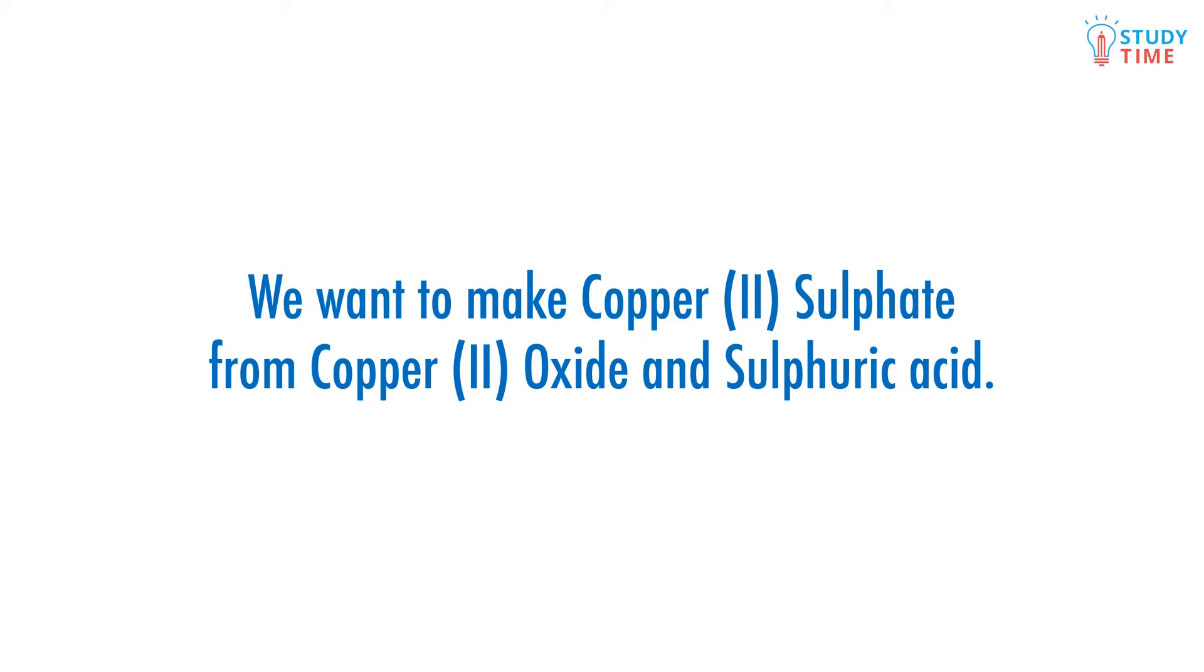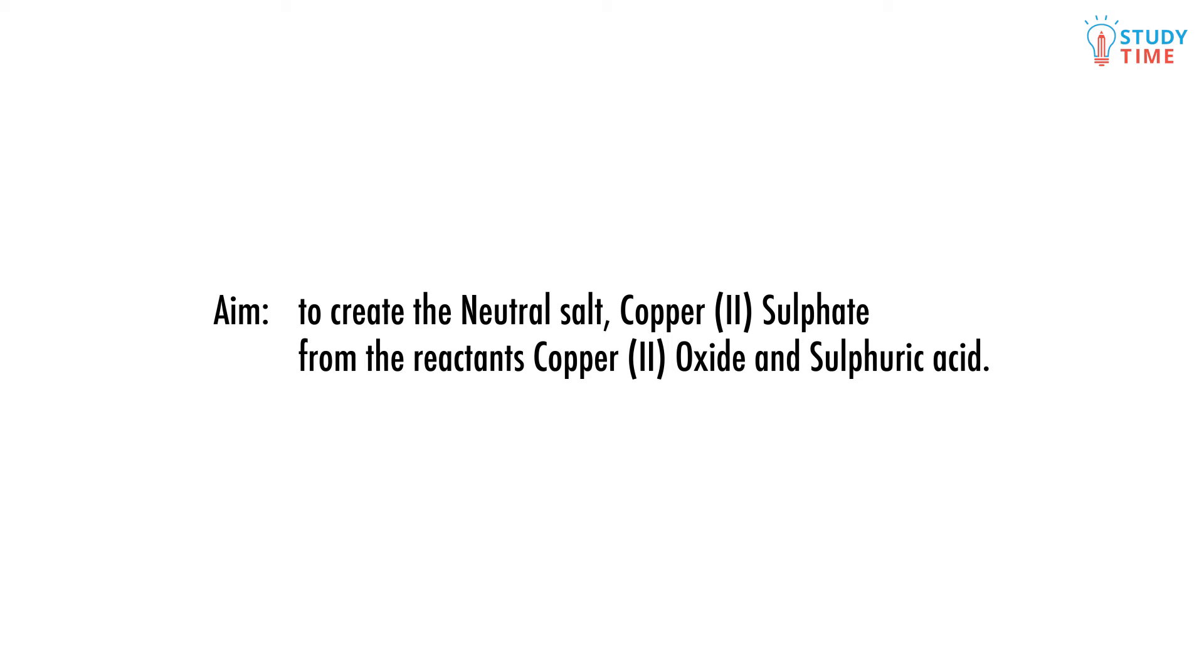From copper (II) oxide and sulfuric acid, the first thing in an experiment is deciding on an aim. The aim is just a way to say what you want to achieve in the experiment. In this experiment, the aim is to create the neutral salt copper (II) sulfate from the reactants copper (II) oxide and sulfuric acid.